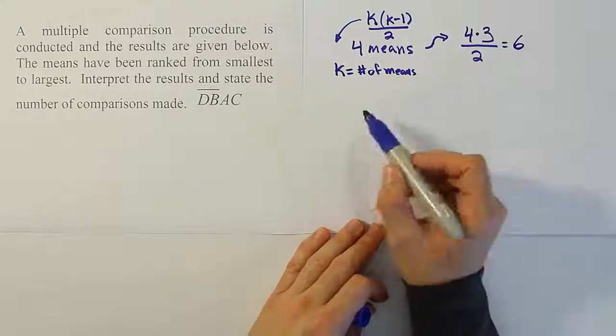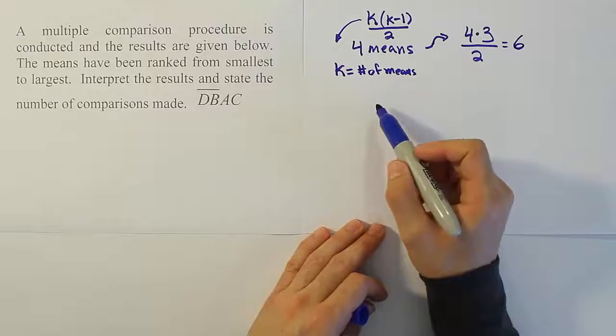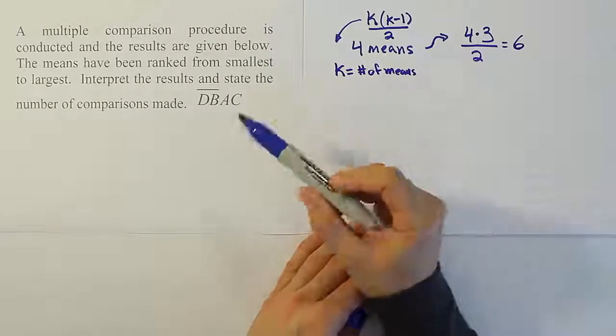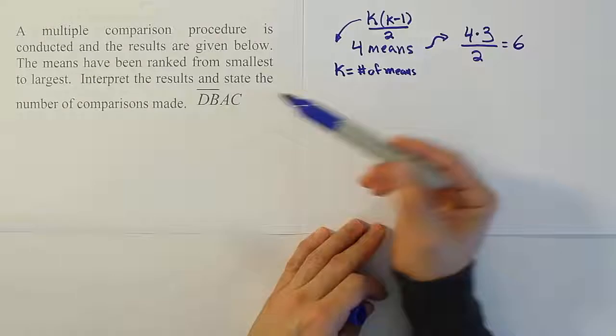Okay, so now that we know there are 6 different comparisons made, the next step is to interpret what we found out. So if it's going from smallest to largest, it means that D is the smallest and C is the largest.